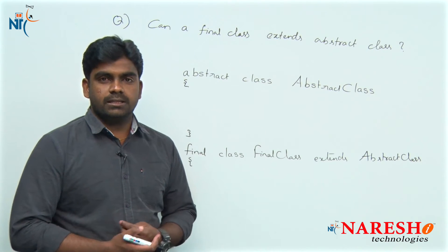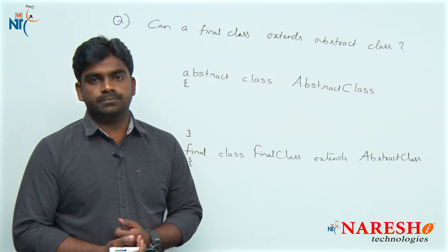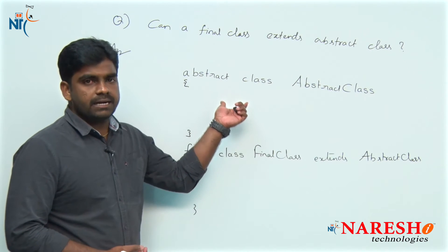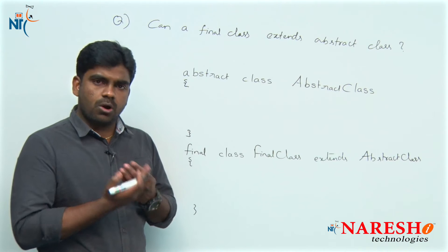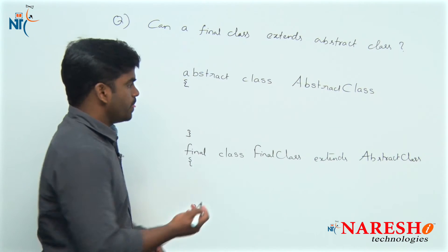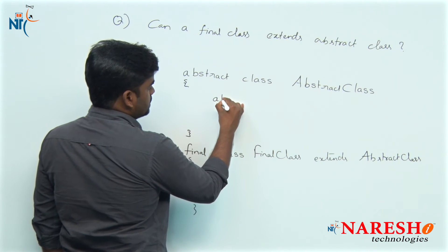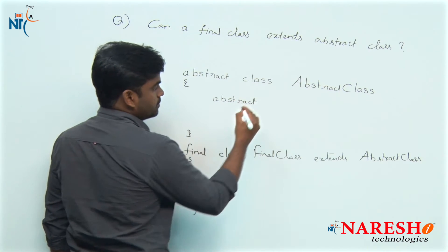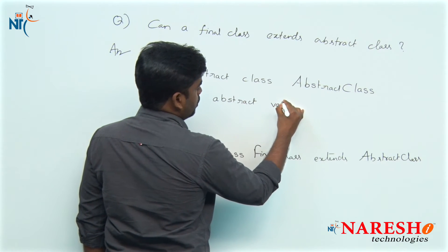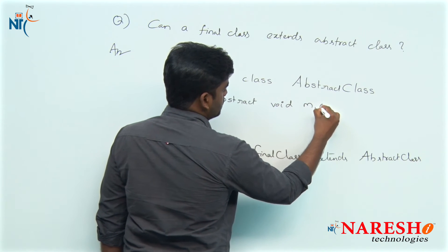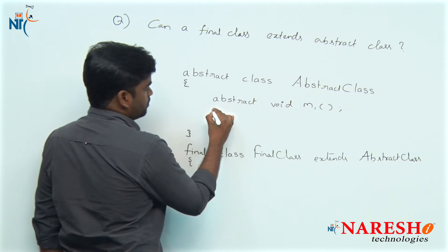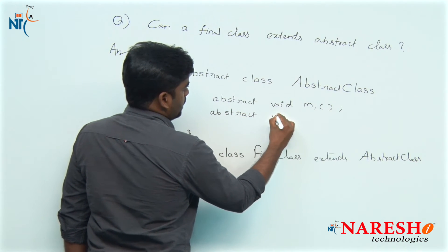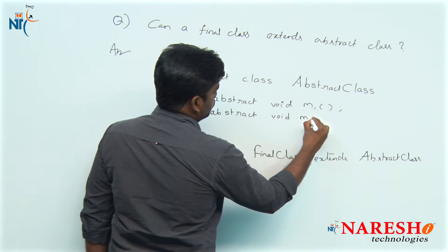What are those conditions? An abstract class definitely contains abstract methods, and of course concrete methods are also allowed. Here there are two abstract methods in the abstract class: abstract void m1 and abstract void m2.